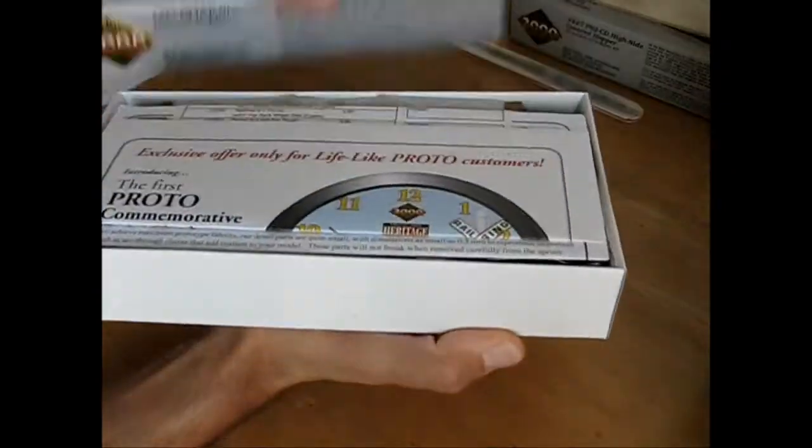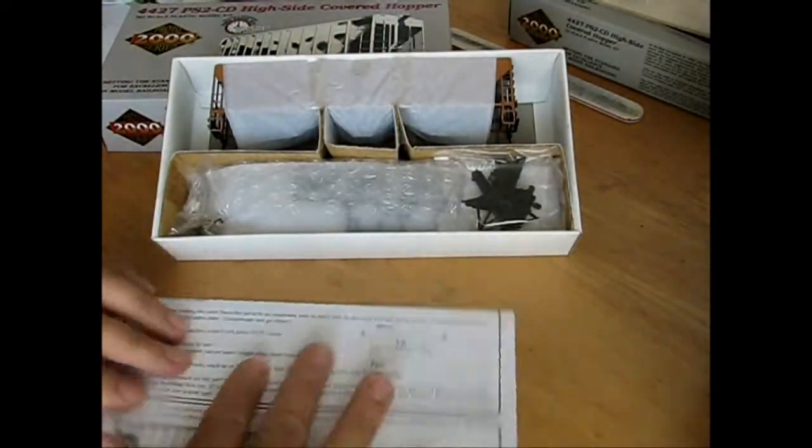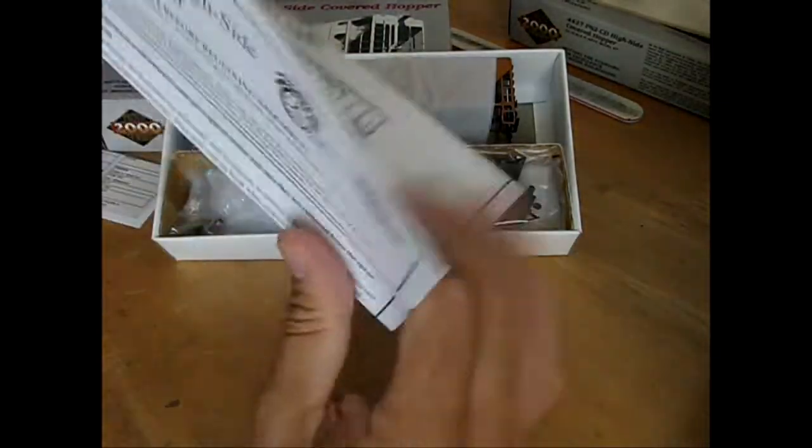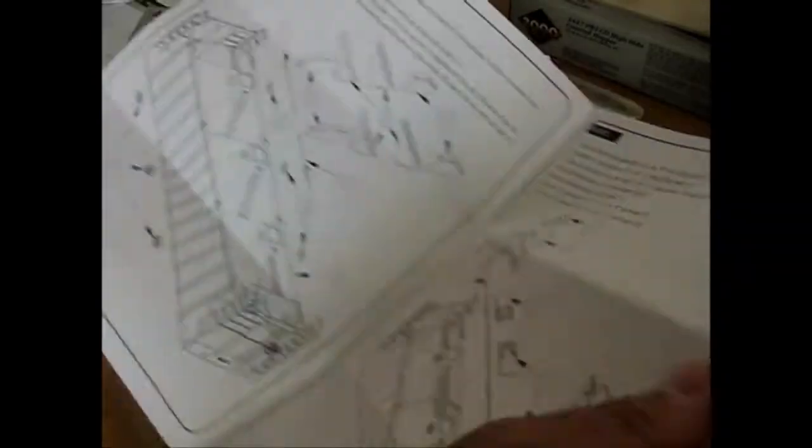A recent visit to the Milepost 38 Hobby Shop in Orange County yielded a two-pack of covered hopper kits from Proto 2000. Cost, $19.98 plus tax.